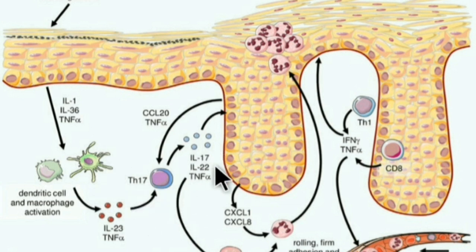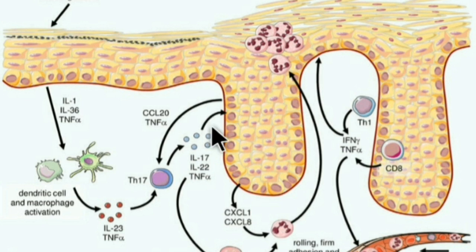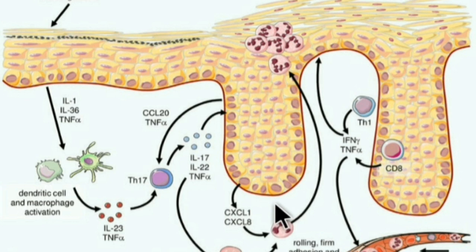Interleukin-17 increases pro-inflammatory cytokines such as S100, A7, beta-defensin, and lipocalin. Interleukin-17 also promotes keratinocytes to produce chemokines such as CCL-20 and CXCL-8, which attract neutrophils to the site of inflammation.